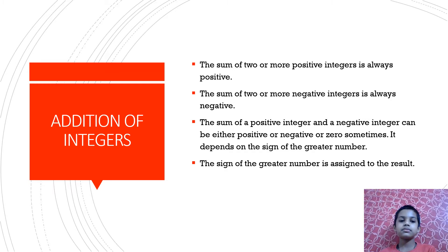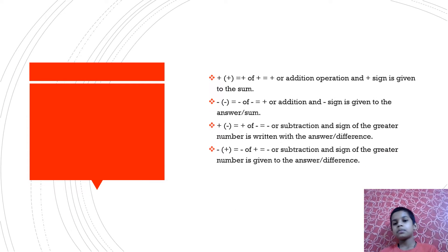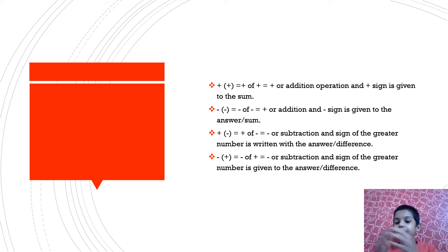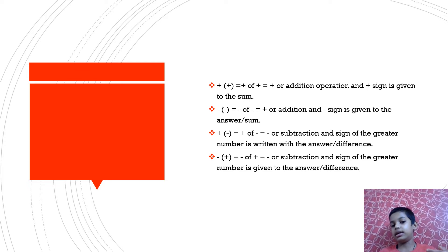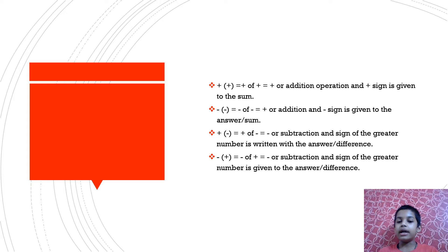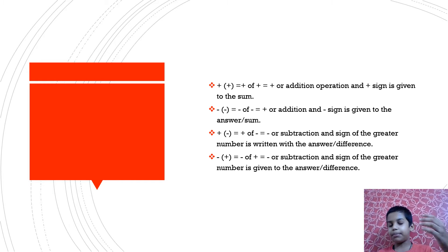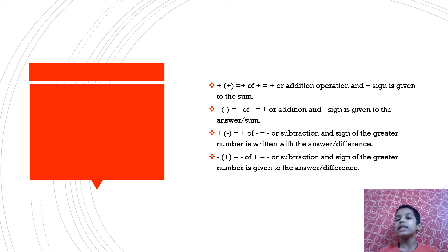The rules which are helpful in adding and subtracting integers are here. The first rule: plus of plus is addition, and the plus sign is given to the answer. The second rule: minus of minus is addition, and the plus symbol is given to the answer. Next, plus of minus is subtraction — the sign of the greater number is given to the answer. Minus of plus is also subtraction — the sign of the greater number is given again.